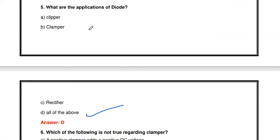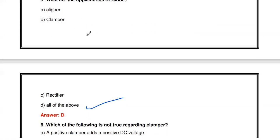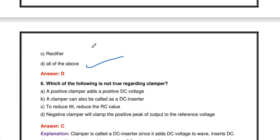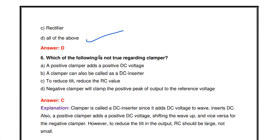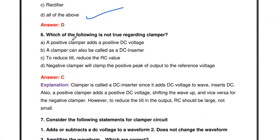Next question: What are the applications of a diode — clipper, clamper, rectifier, or all of the above? The answer is all of the above. Using a P-N junction diode, we can design clipper circuits, clamper circuits, and rectifiers — half-wave, full-wave, and bridge rectifiers.